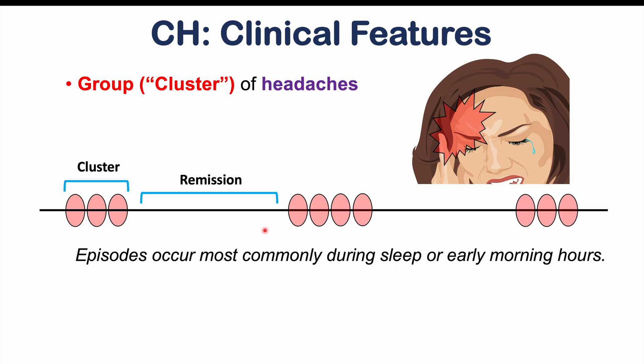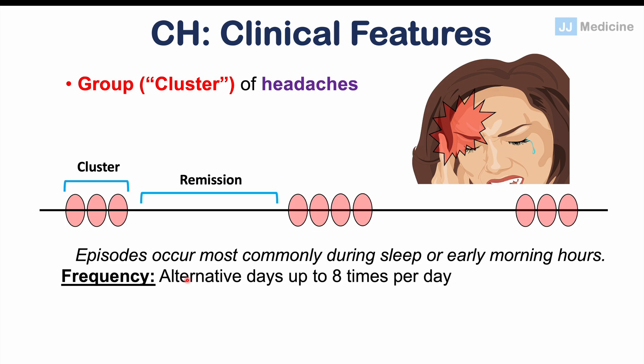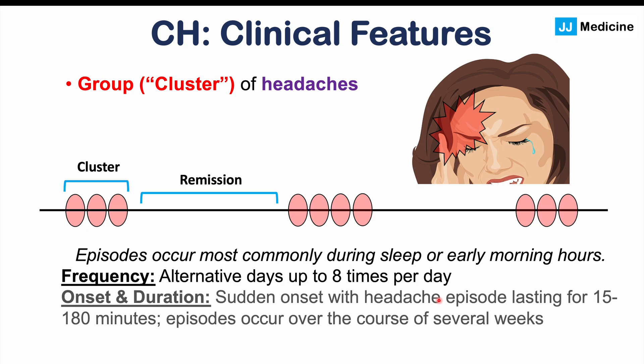These headache episodes occur most commonly during sleep or early morning hours, and there is some connection with the circadian rhythm. The frequency can range from one every other day up to eight times per day. These episodes have a sudden onset, can peak within 10 to 15 minutes, and last from 15 to 180 minutes — up to three hours. Episodes can occur over the course of several weeks.